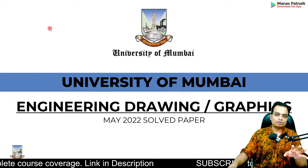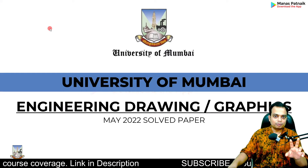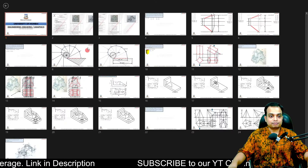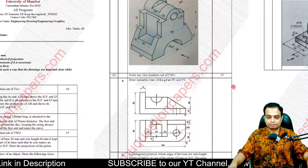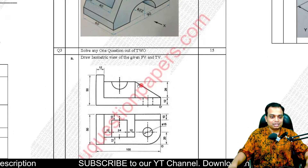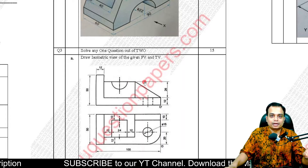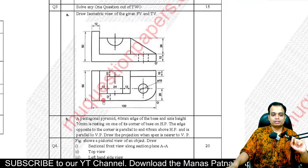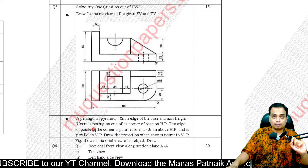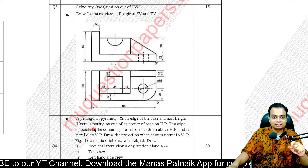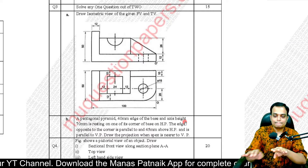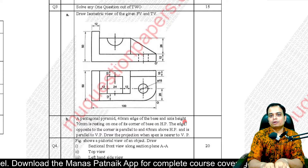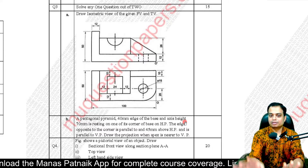Question number three, University of Mumbai. There are going to be two parts, and the maximum mark is 15. So either you can go with the problem based on isometric drawings, or you can go with the problem on projection of solids. Both of these problems are at an equal difficulty level, and it's going to take you around 15 to 25 minutes.